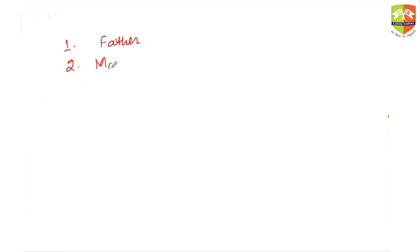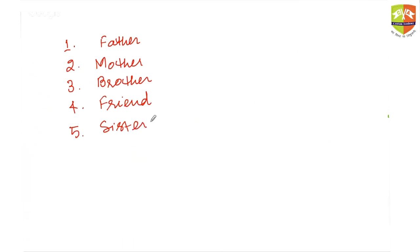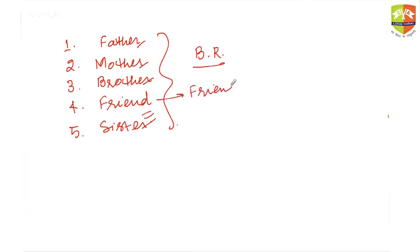Let me give a few odd word examples. Find the odd word: father, mother, brother, sister, friend. Friend is the right answer because father, mother, brother, and sister are all blood relationships, while friend is not a blood relationship. Hence the answer is friend.